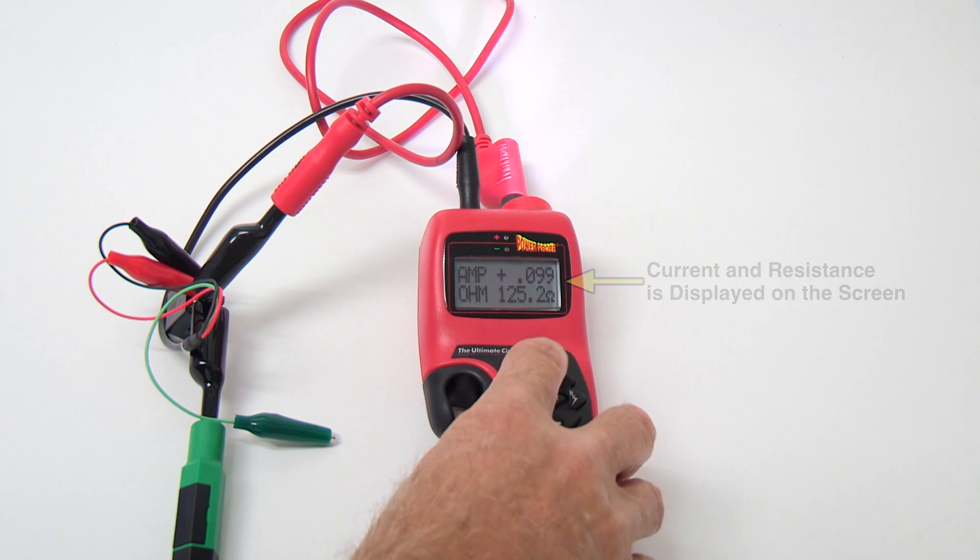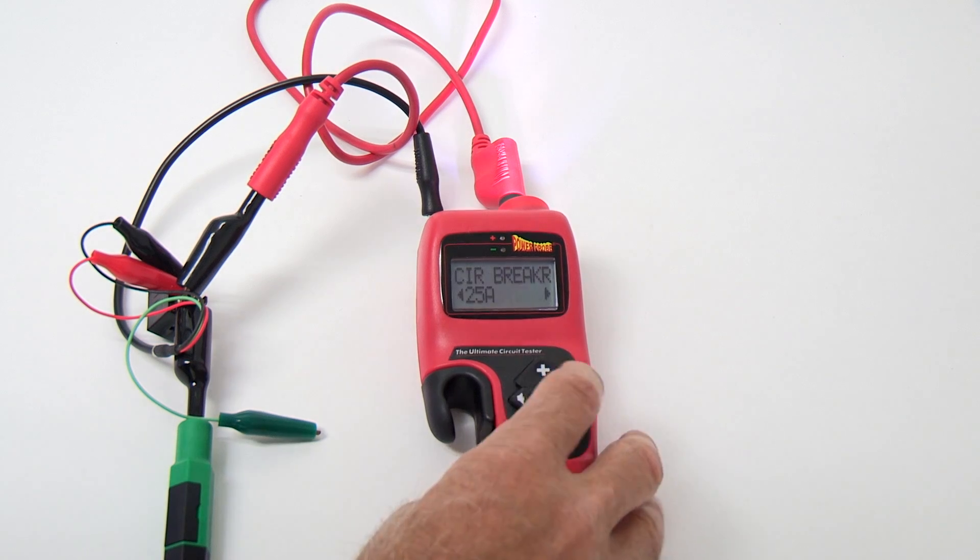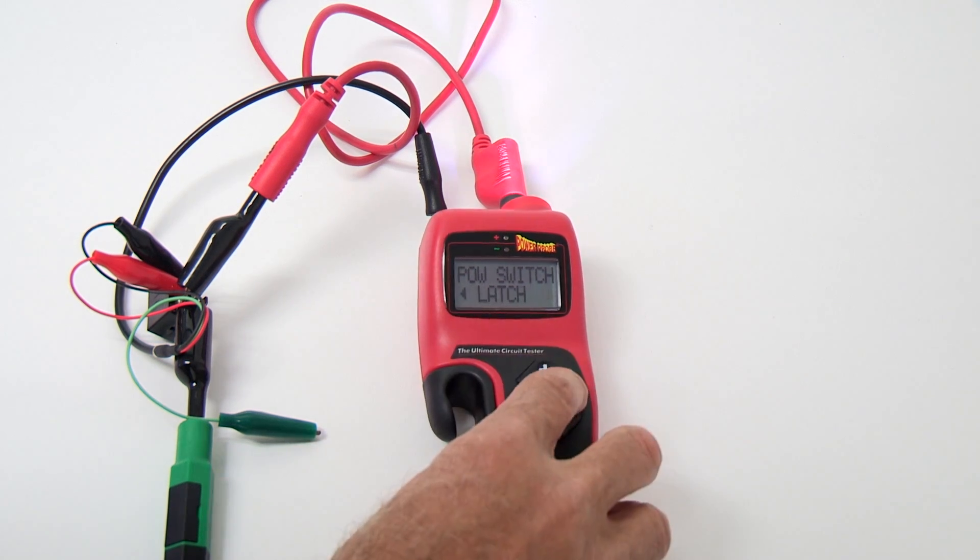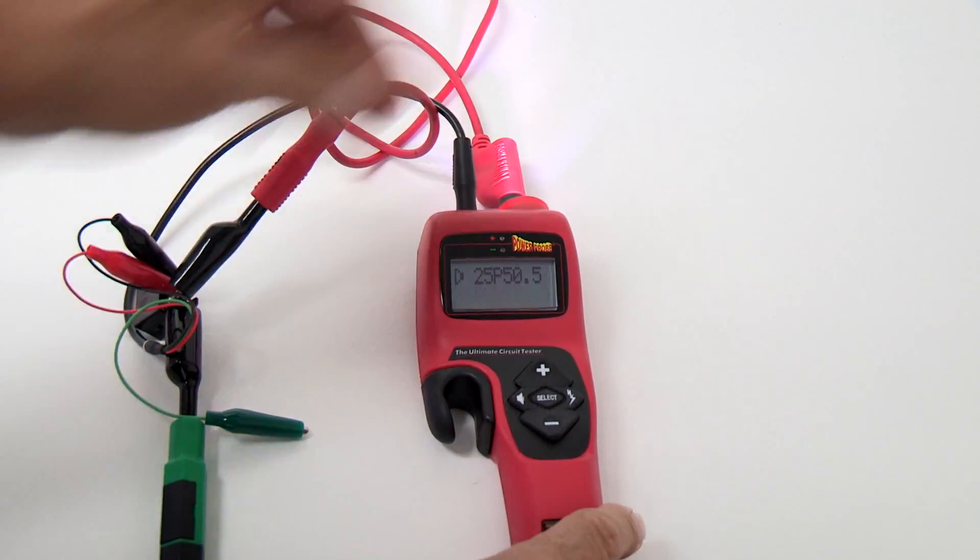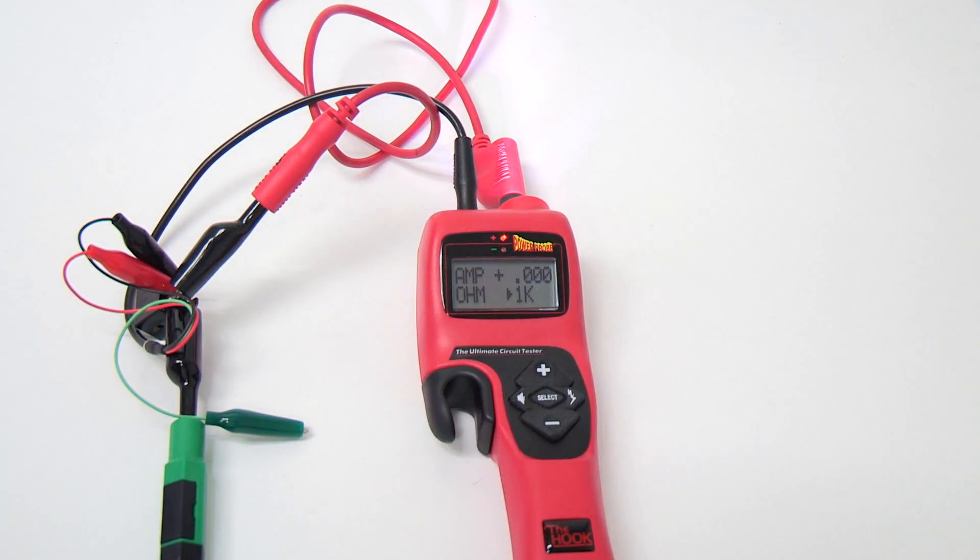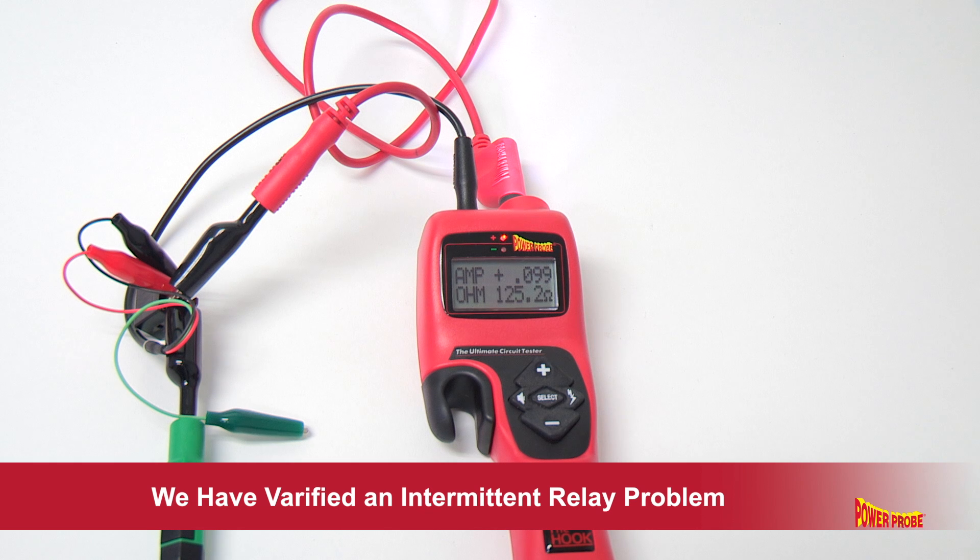Next, let's put the hook switch into pulse mode. This will test the relay for an intermittent problem, as we suspect we may have here. Latch mode holds power on constantly, and pulse mode cycles power on for a half second and then off for a half second continuously. This is how we'll test for an intermittent relay problem. After a few minutes of cycling the relay on and off, we have verified the relay as the problem. We found that at times, our relay would not operate.